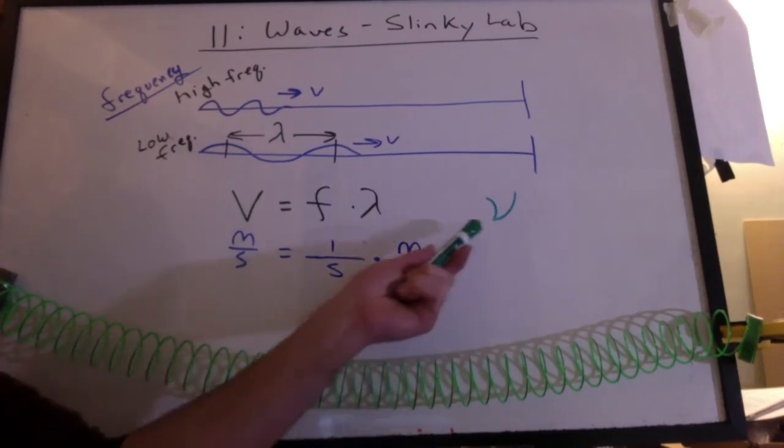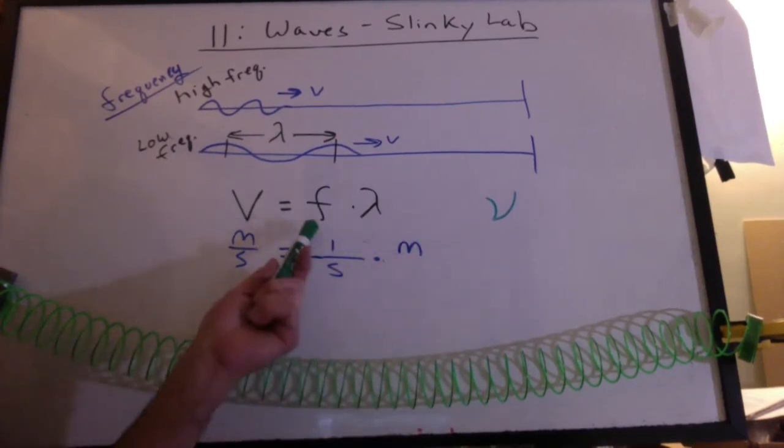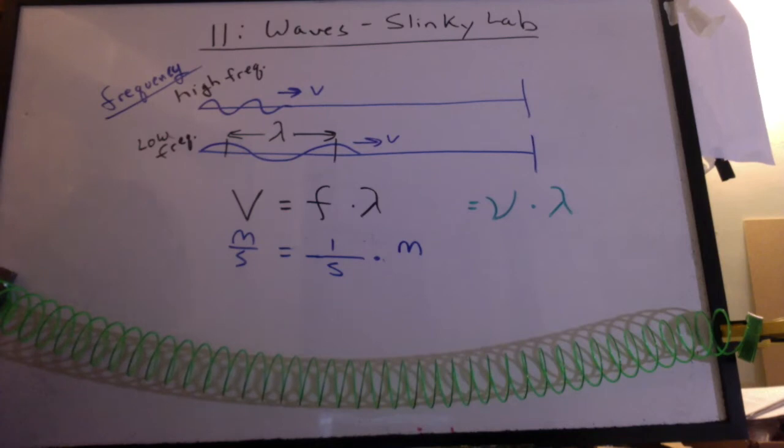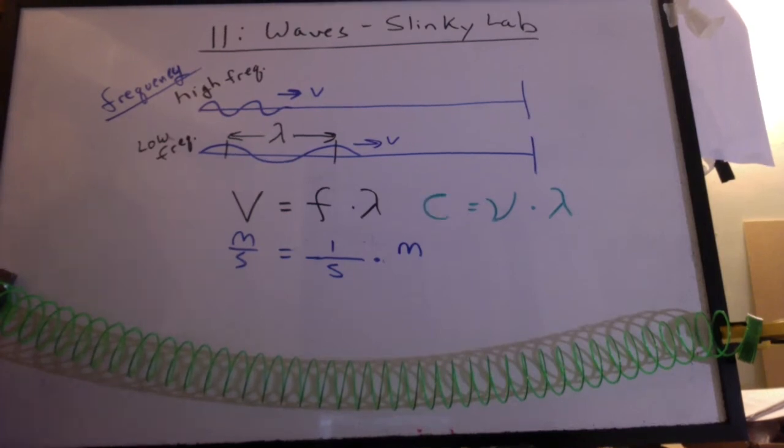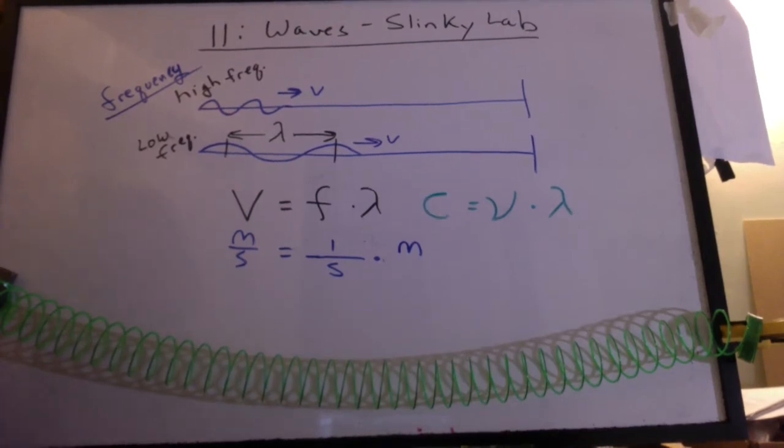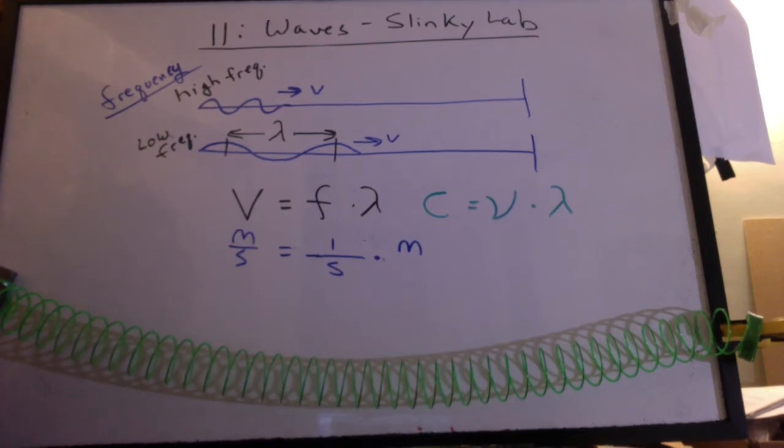In chemistry, you may have seen the Greek letter nu to be used for frequency, and the Greek letter lambda for wavelength, and the letter c for the speed of light. This is where you used it in chemistry when we were studying light.